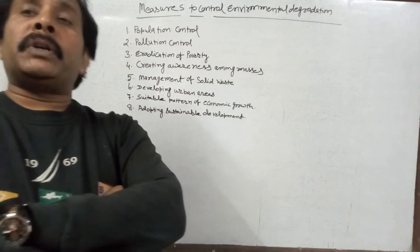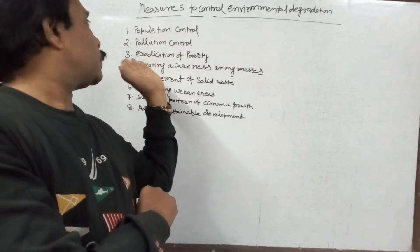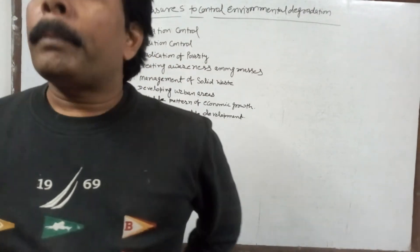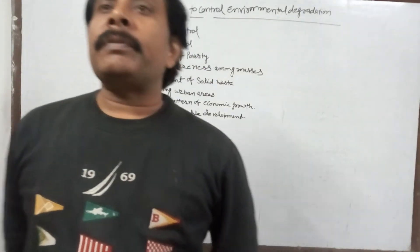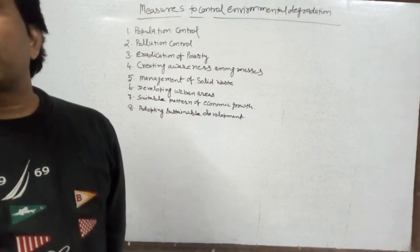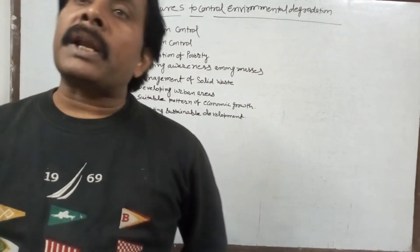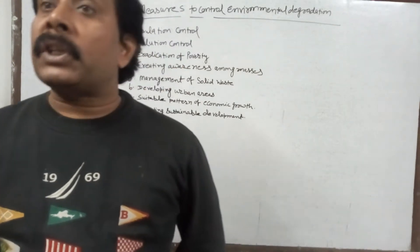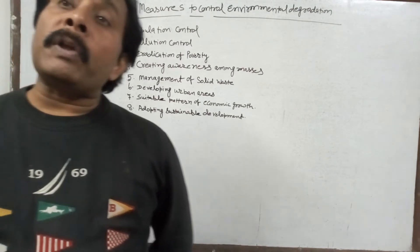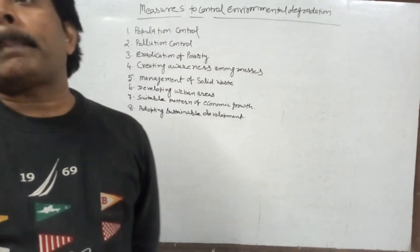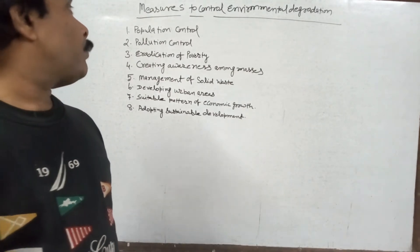In this video I am going to discuss how population control, pollution control, and eradication of poverty will help to control environmental degradation. With increase in economic activities to achieve the desired level of economic growth, industrialization and urbanization have increased, which has caused environmental degradation.